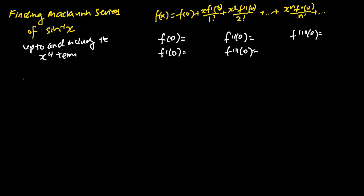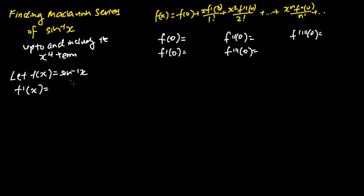We first start off by letting f(x) equal sine inverse x, and then we work on finding f'(x) by differentiating f(x) one time. We basically get 1 over the square root of 1 minus x squared.